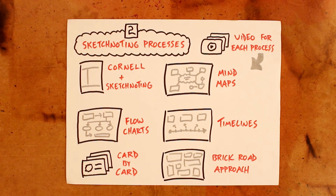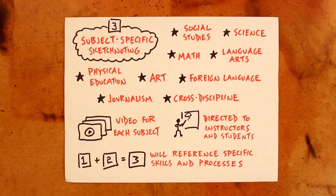Part two will focus on specific sketchnoting processes. Here we'll start to look at how you can combine the individual tools from part one into a cohesive note-taking process. We'll explore things like flow charts, mind maps, and other ways to get ideas out of your head and onto the page. Part three will explore how to apply your growing sketchnoting skills to specific subject areas — what tools and processes work best in science class compared to language arts class compared to math class and many others.